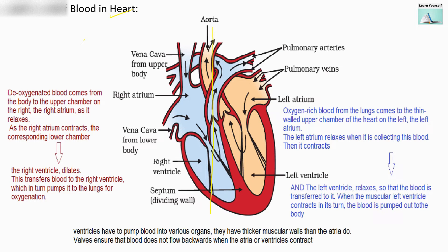Here we are dividing the heart into two equal parts — the left part and the right part. Into the left, there will be two things: the upper portion of the left is the left atrium, and the lower portion of the left part is the left ventricle.